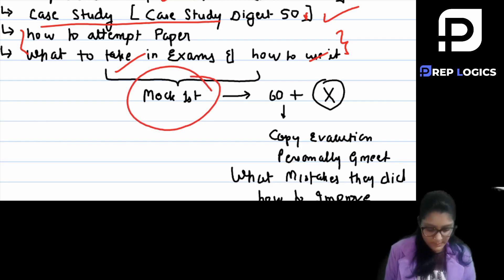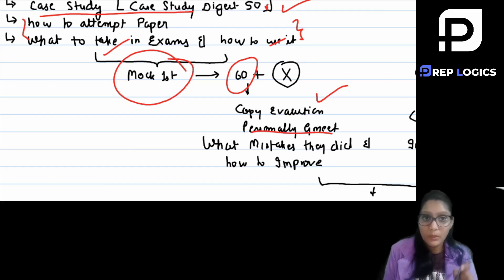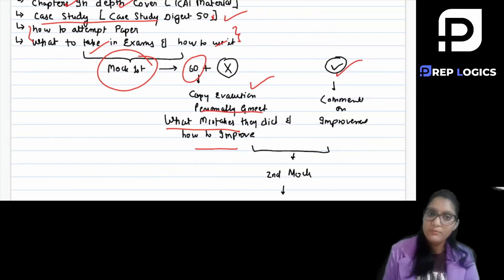If you can't get 60 plus in your first mock test, then your copy will be evaluated but after your copy evaluation I will call personally on Gmeet and I will tell you that this is your mistake and how you should improve it. But suppose that your 60 plus marks come so it is very good for you. I will give you comments if you have some scope of improvement.